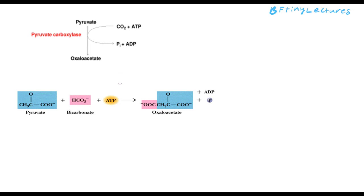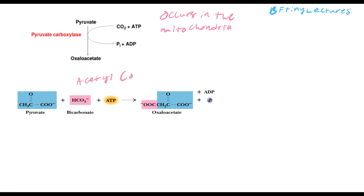Gluconeogenesis is a shorter reaction compared to glycolysis. The first step occurs in the mitochondria. Pyruvate enters the mitochondria and interacts with acetyl coenzyme A. Acetyl coenzyme A only occurs when there's a lot of oxidation because of fats — meaning the body has a lot of energy.